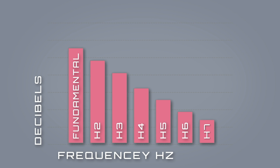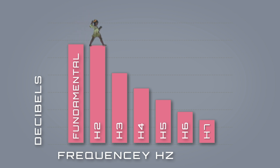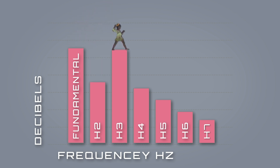Peter Pan will jump on these columns, and each time he lands on one of them it will receive more energy and become louder and taller. Wendy can join and jump on the columns to the right.